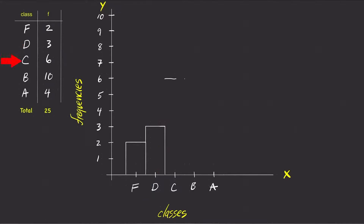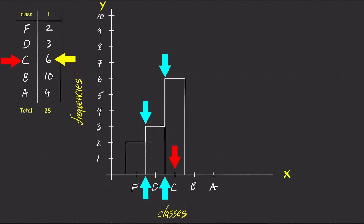For the third class C, the frequency is six. So draw a rectangle with a height of six on top of C. Notice how the tick C is in the middle of each side of the rectangle, and there is no gap between any rectangle.